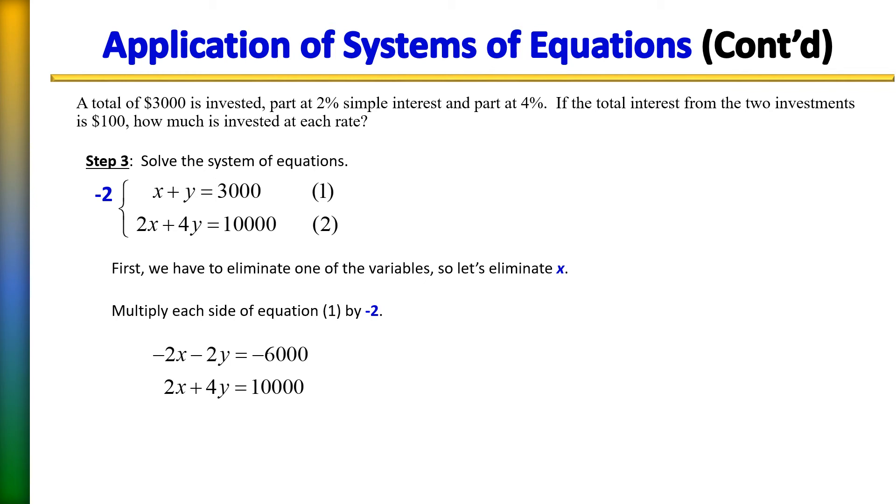So now I can go ahead and proceed with drawing the line and do my addition. So what I'm left with is 2y equals 4000. Last step to solving this is to divide by 2 and y equals 2000.